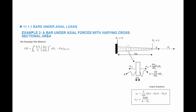As a reminder, the potential energy of the system for a beam under axial load equals the integral of (EA/2) multiplied by epsilon11 squared, where epsilon11 is du1/dx1, integrated over the length from 0 to L, minus the work done by external forces. Here we only have one force doing work, which is P multiplied by the horizontal displacement at x1 equals L.